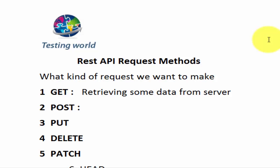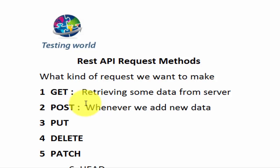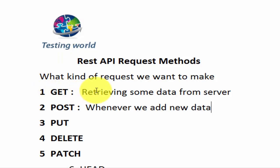Next is POST. POST requests are used when we are creating a new resource on the server. For example, consider an application with customer details. If I want to fetch a customer's detail from the server, I'll use GET. But if I want to enter a new customer to the server, we are going to use POST. Using Jira as an example — whenever we want to get details of any bug, we use GET. But whenever we want to add a new bug to Jira, we use POST method.